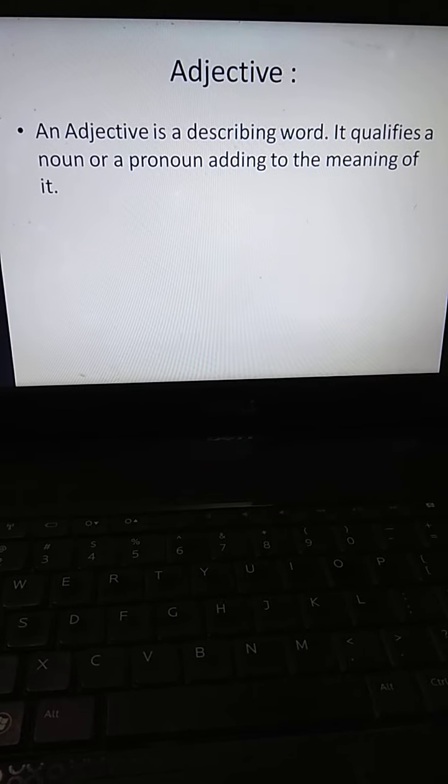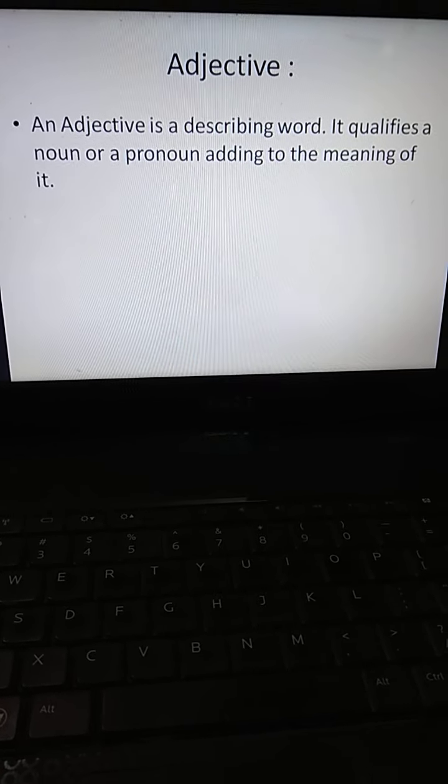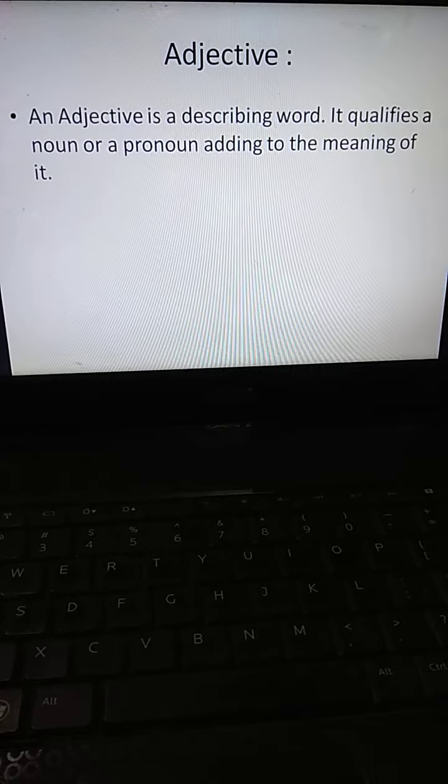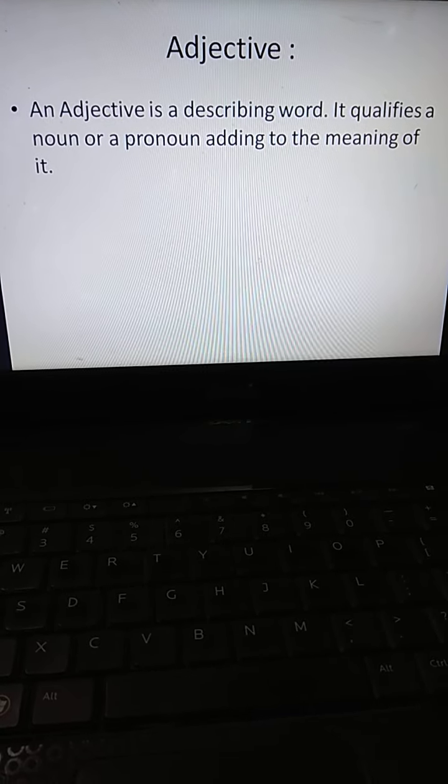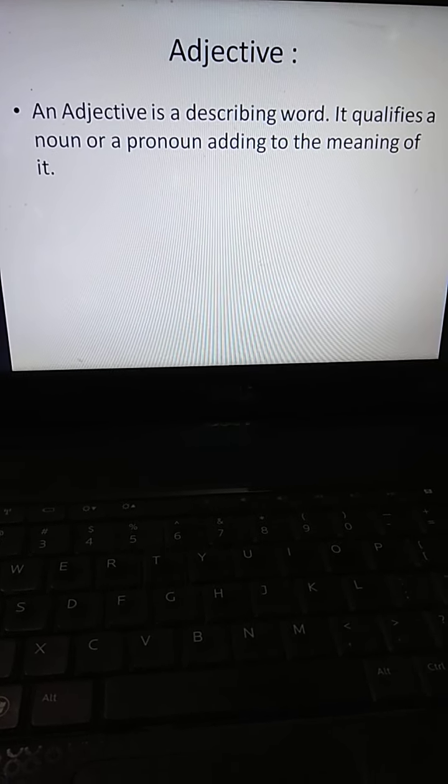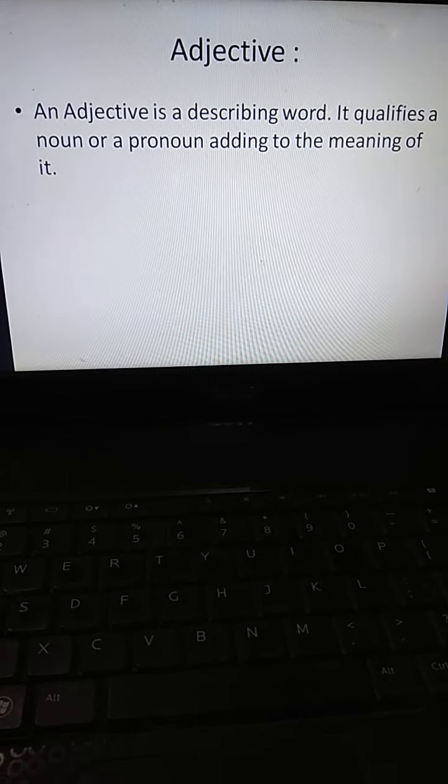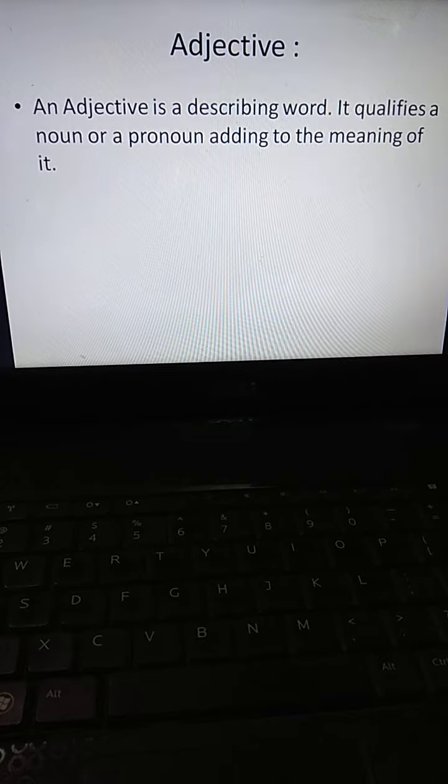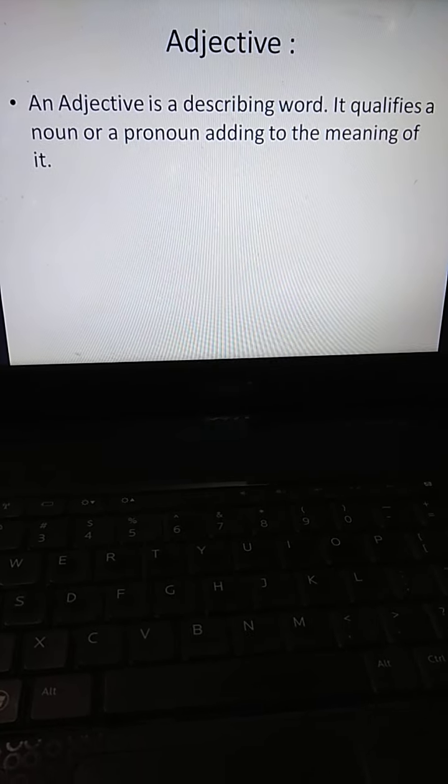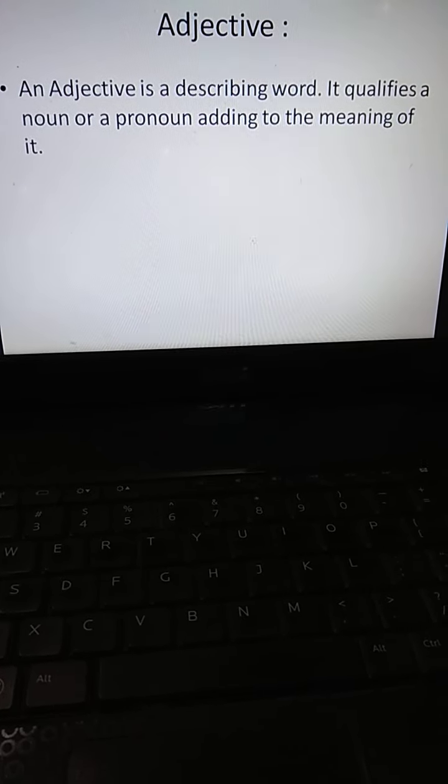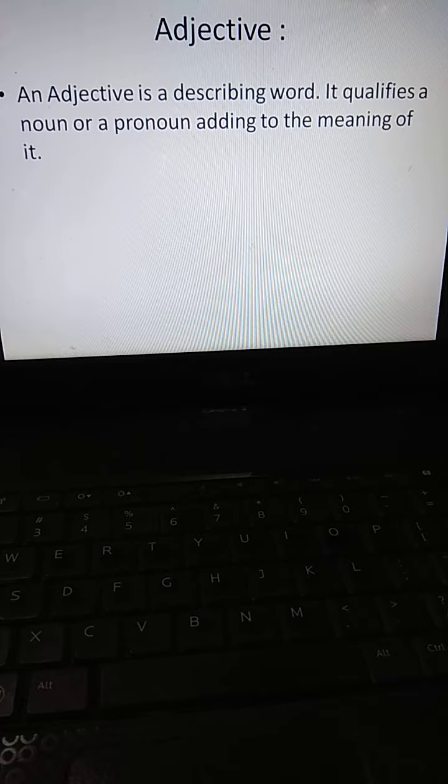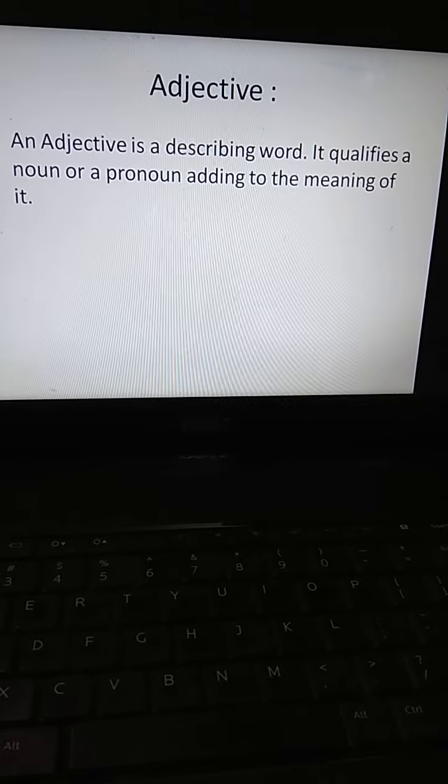First of all, what is an adjective? An adjective is a describing word. It qualifies a noun or a pronoun, adding to the meaning of it. We need words to qualify a noun or a pronoun. For example, Pratibha is an intelligent girl. In this, intelligent is an adjective. I found this pen lying here. This is an adjective.